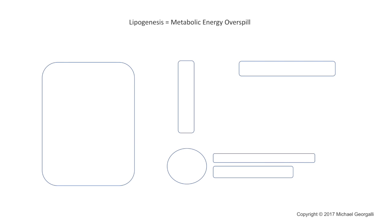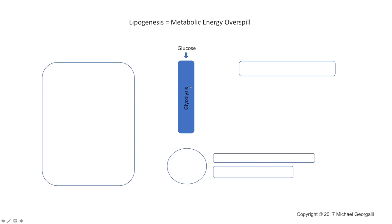When you consume things like carbohydrates, at the end of digestion you end up with glucose. Glucose enters into the bloodstream and eventually makes it to a cell where it's transported into the cytosol. From the cytosol it enters into a number of metabolic pathways, but primarily it enters into glycolysis.